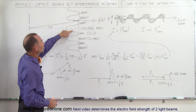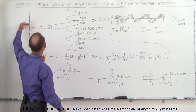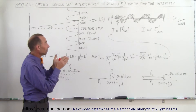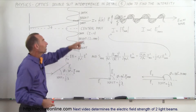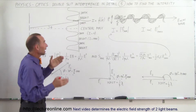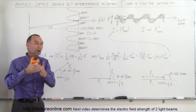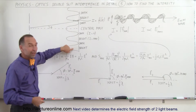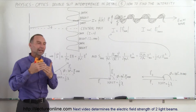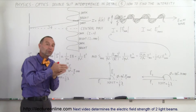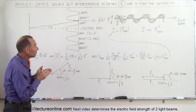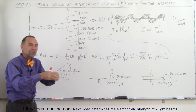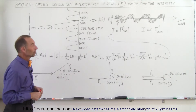If the extra distance traveled by one wave from one slit compared to the wave from the other slit differs by half a wavelength, they'll be 180 degrees out of phase and will destructively interfere — you'll see a dark spot. If the extra distance is a full wavelength or two wavelengths, you'll see a bright spot, because the extra path length puts it back in phase. So if it's an integer number of extra wavelengths, the two waves come together in phase and you get constructive interference.